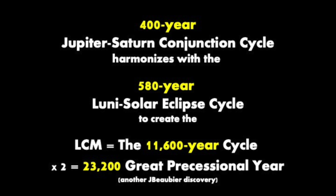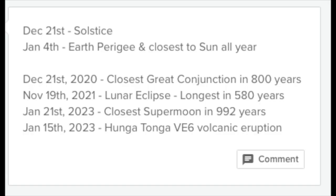This is also an important point. Another discovery that I made was that if you combine the 400-year Jupiter-Saturn conjunction cycle with the 580 lunar-solar eclipse cycle, the lowest common multiple where those two harmonics would meet would be 11,600 years. And you can see that we are really at a point of convergence for those cycles, which would be unusual except for at 11,600 years.